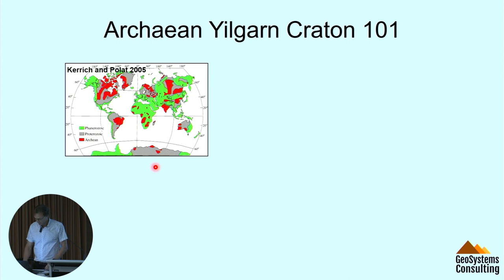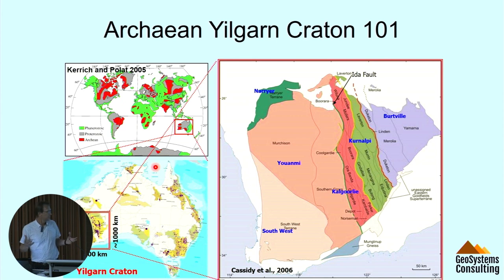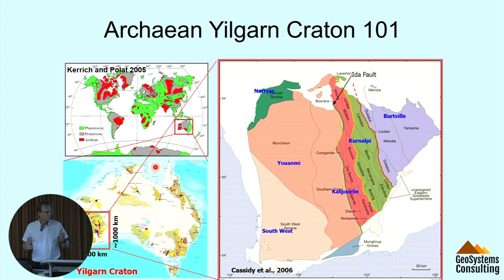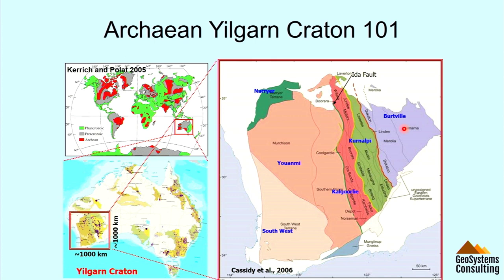We're part of a number of Archean cratons scattered around the world. This is a famous one, the Yilgarn — well understood, well studied, obviously in WA. The Yilgarn itself is a big area, broken up into a number of terrains and domains. We have a southwest terrain, a Youanmi terrain, a Narryer terrain — the older part of the Yilgarn. We cross the Ida Fault and we go into the Eastern Goldfields superterrain where we have the Kalgoorlie, Kurnalpi and Burtville domains. Some ideas have evolved over the last 20 to 30 years about whether these are separate entities that have been at different parts of different oceans and come together, or whether it's one entity that's been rifted and brought back together. The consensus now is that it was largely intact and has seen some extension and contraction and some movements in between.